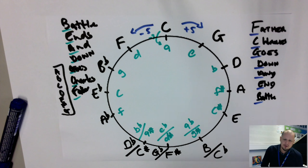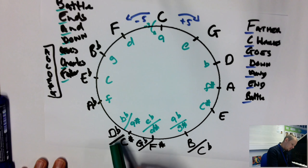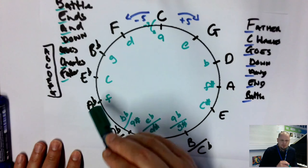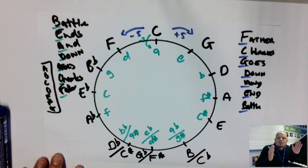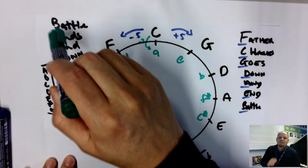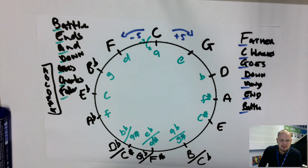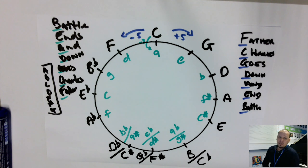Looking at D flat major from the circle: it has five flats. What are those flats? The first five letters of 'Battle Ends And Down Goes Charles's Father' gives us B, E, A, D, and G. That is your circle of fifths — all your major and minor keys. Use 'Father Charles' for sharps, reverse it for flats. Thank you for listening.